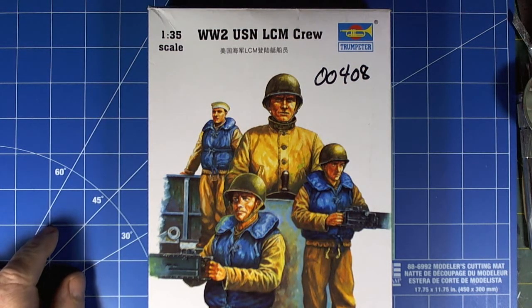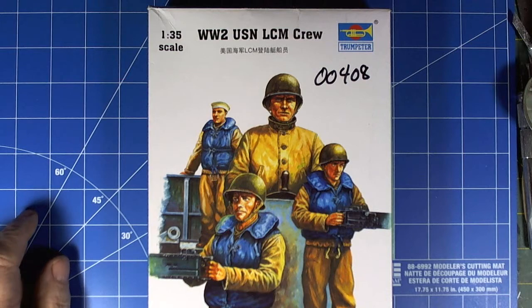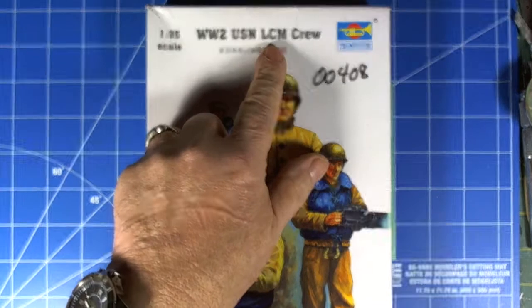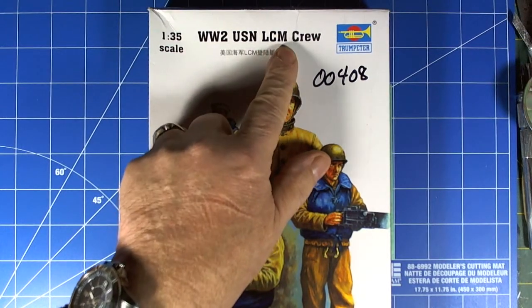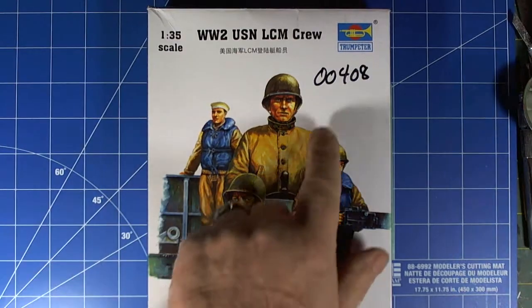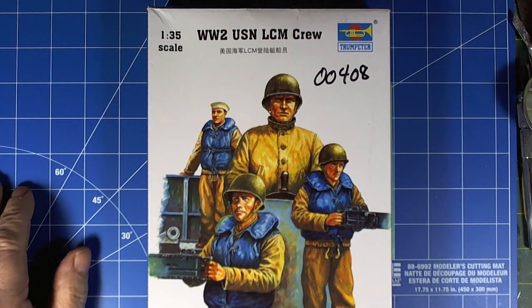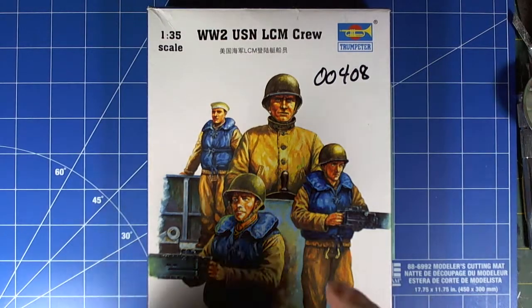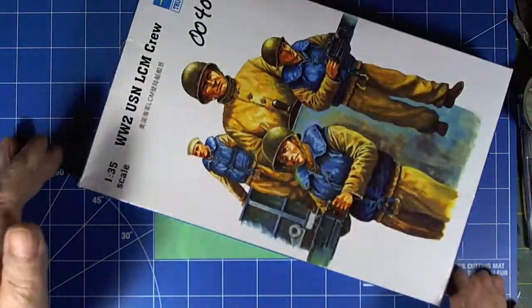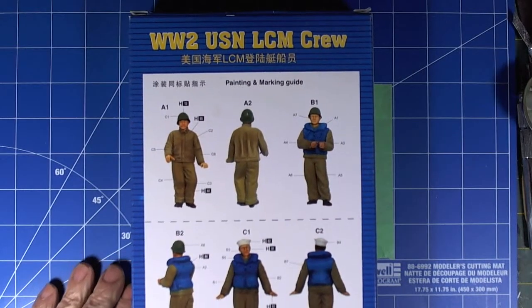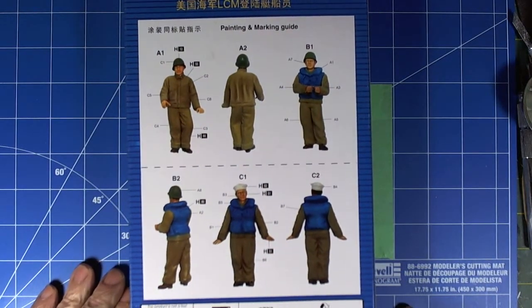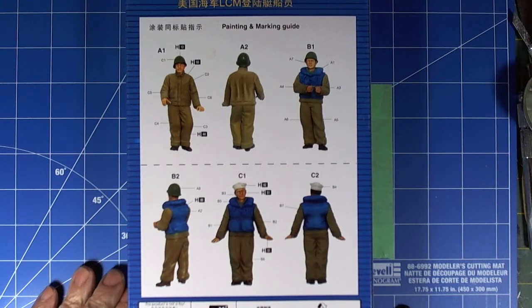The 1:35 scale USN Landing Craft Mechanized crew, the kit number is 00408. Here's the box, there's nothing on the sides and on the back we have the color renditions, the painting guide and so on. They're all Humbrol paints but I'm sure we can find suitable paints for them.